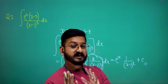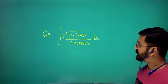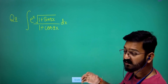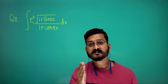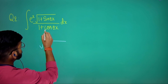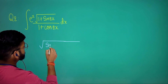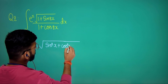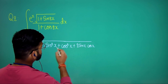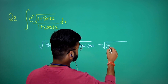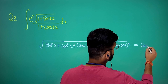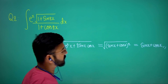Now let's look at a question involving trigonometric ratios. The integral is e to the power x multiplied by the square root of (1 plus sin 2x), divided by (1 plus cos 2x). To simplify √(1 + sin 2x), we use the identity sin 2x = 2 sin x cos x and write 1 as sin²x + cos²x, giving √(sin x + cos x)², which equals sin x + cos x.